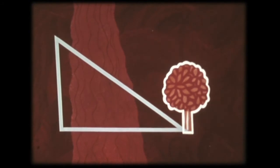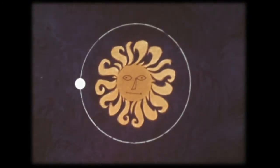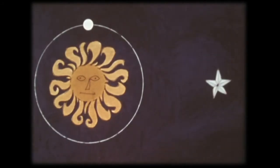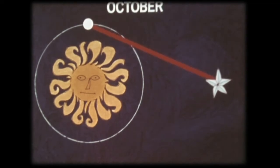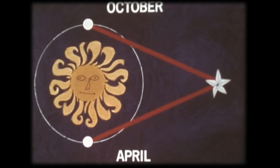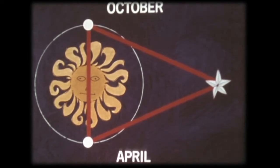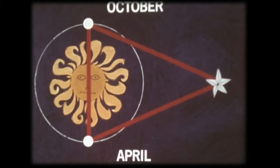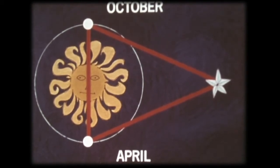The farther away an object is, the longer the baseline needed to accurately measure the object's distance. If we photograph a star in October, wait six months until the following April when the Earth has completed half of its orbit, and take a second photograph, we will have photographed the star from two ends of an extremely long baseline. Astronomers can use this baseline to measure the distance to some stars.